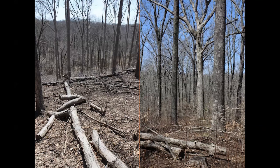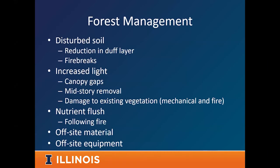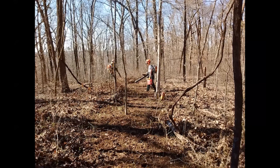Our forest management involves disturbing the soil. Fire can reduce the duff and leaf layer; fire breaks create swaths of disturbed soil; it increases light through canopy gaps and through removing the midstory. We often see a flush of nutrients following fire or a harvest in our systems, and we're bringing in off-site equipment into our forests. This is a natural part of forest management — how we maintain the species we want through this level of disturbance.